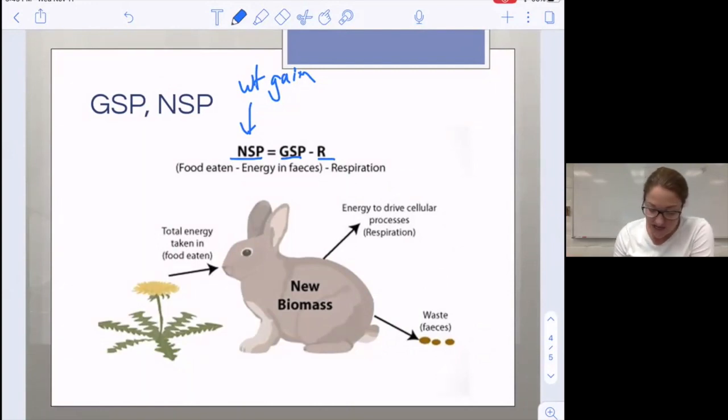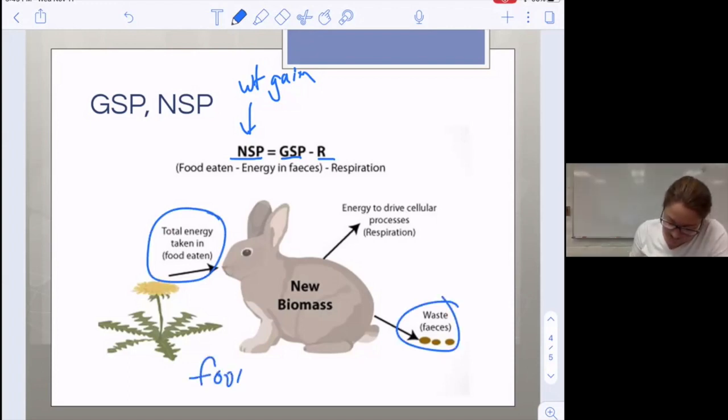The GSP is the amount of energy taken in, which depends on how much food goes in versus how much feces goes out. So food minus feces, the difference in those two masses tells you how many kilograms the animal took in.